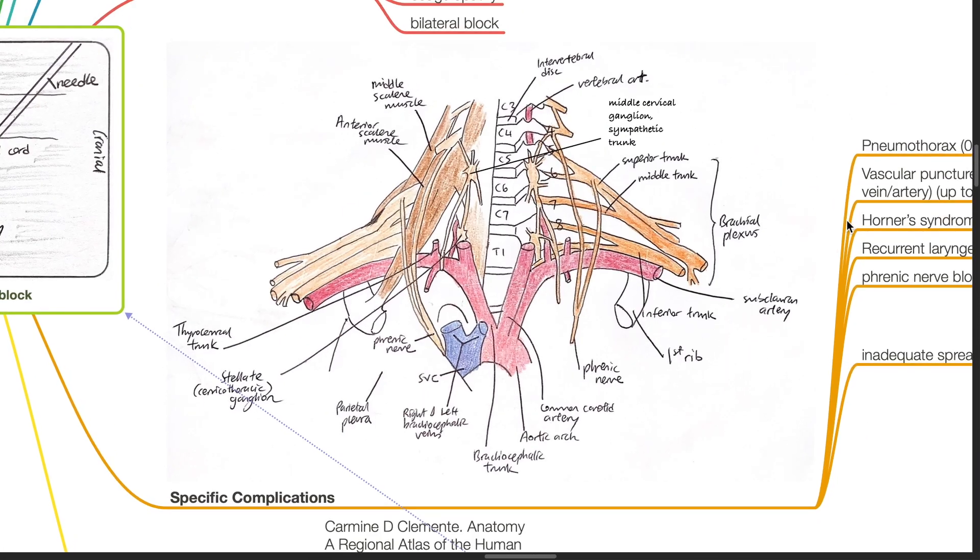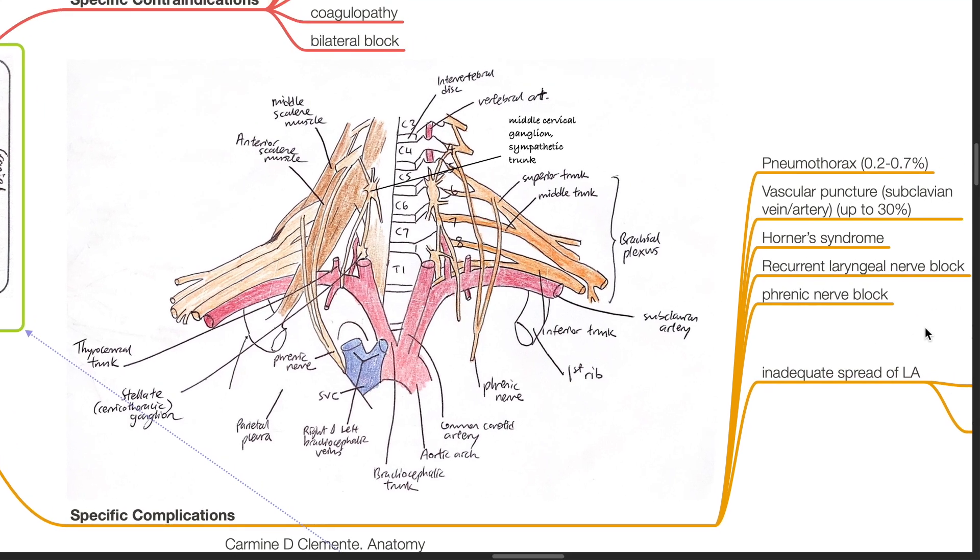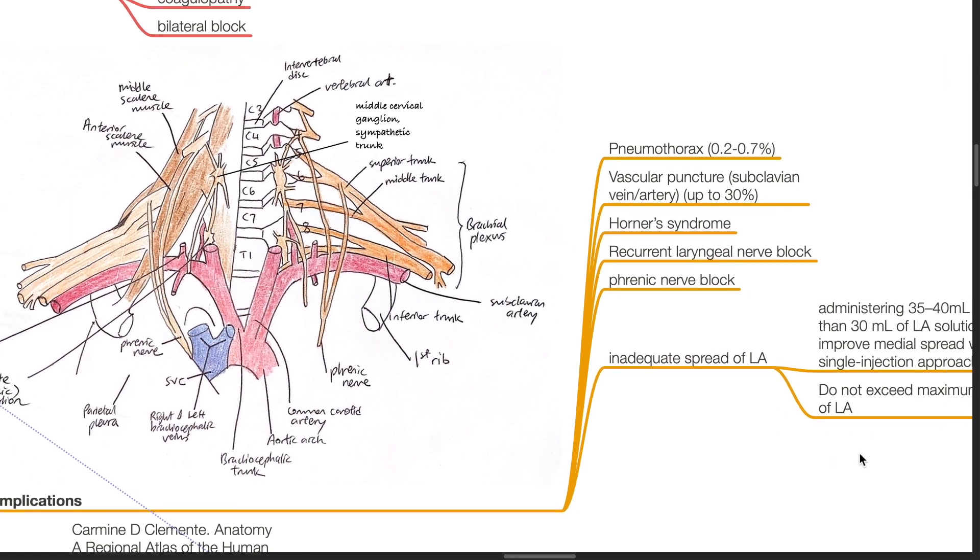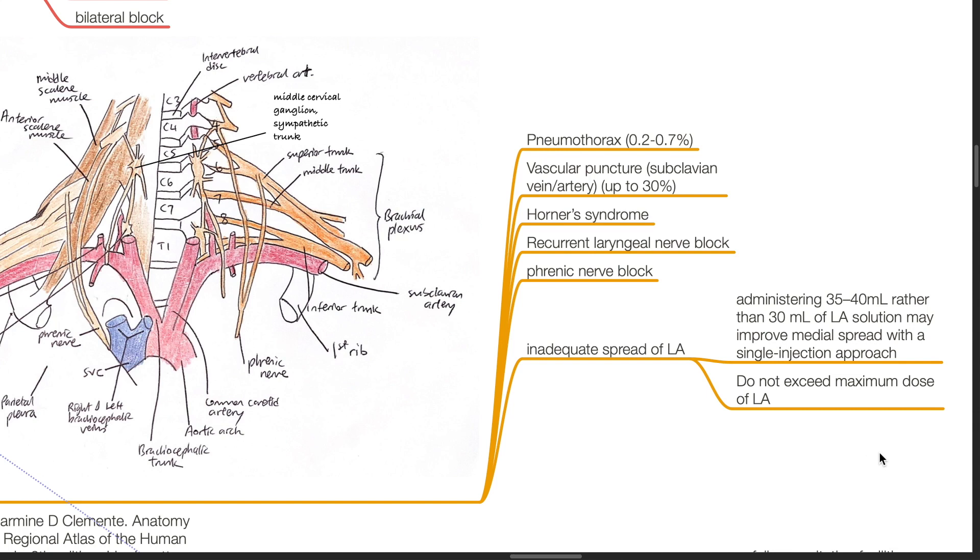Specific complications include pneumothorax 0.2 to 0.7%, vascular puncture of subclavian vein or artery up to 30%, Horner's syndrome, recurrent laryngeal nerve block, phrenic nerve block, and inadequate spread of local anesthetic. Administering 30 to 40 mLs rather than 30 mLs of local anesthetic solution may improve medial spread with a single injection approach. Do not exceed the maximum dose of local anesthetic.